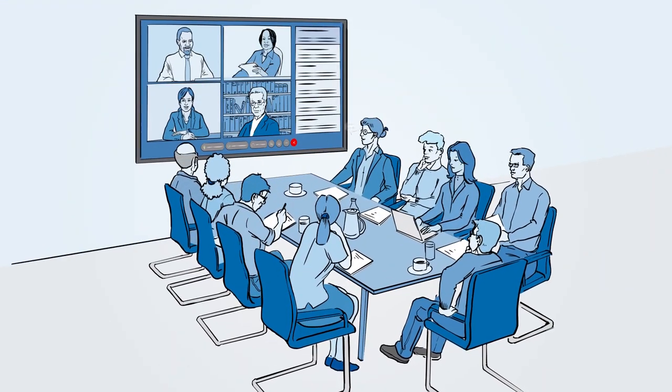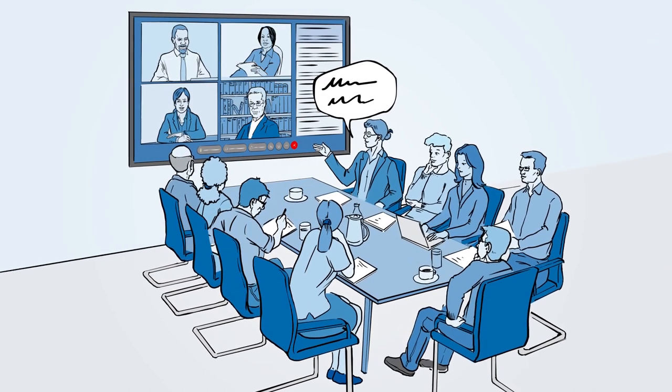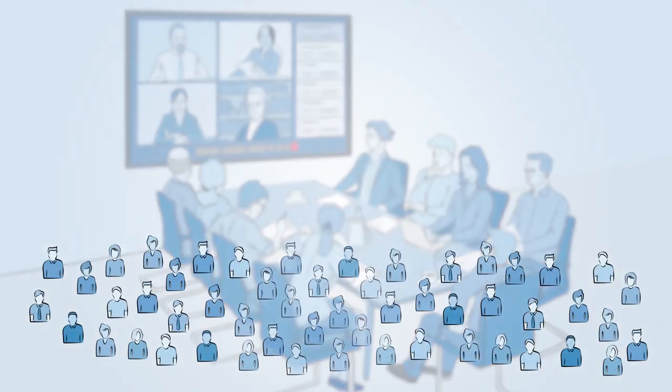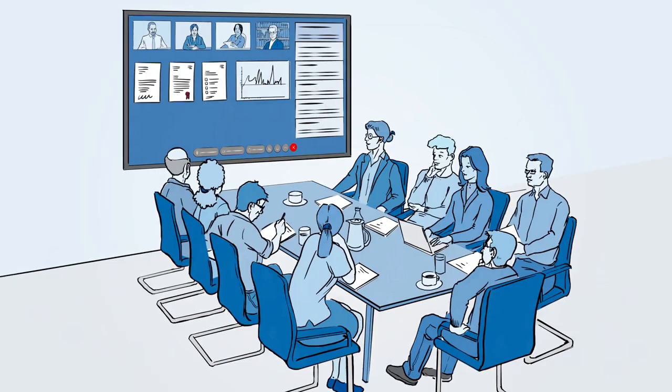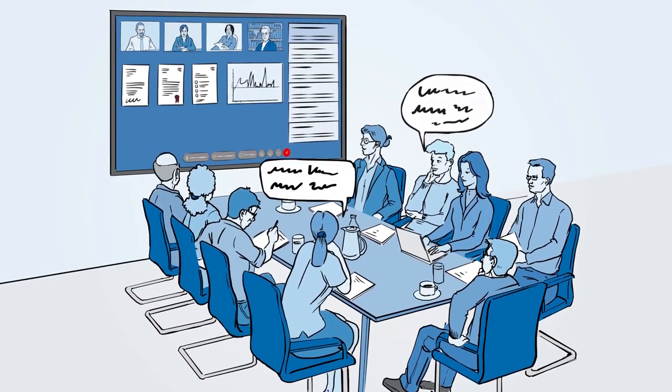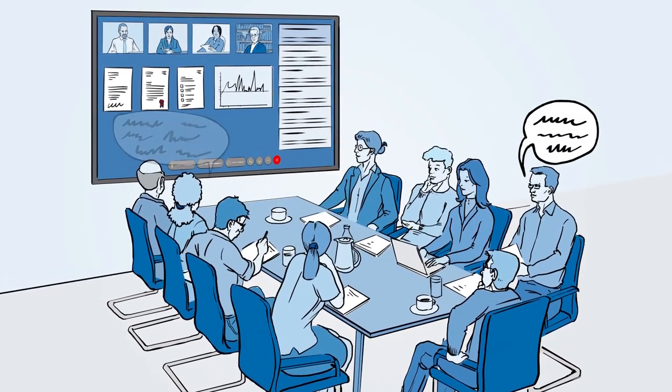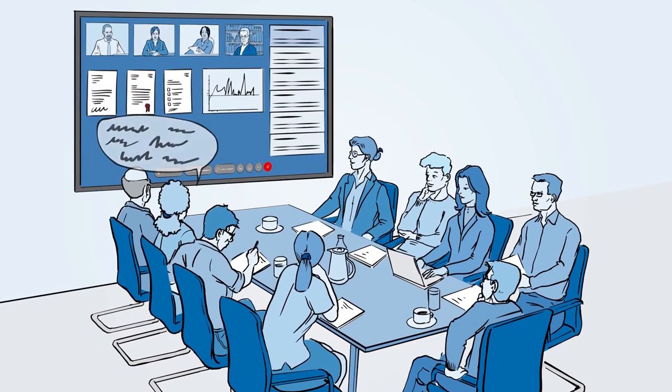The responsible DFG review board then discusses the proposal. The members of the review boards are elected every four years by the academic community itself. They evaluate the proposals either by means of a written procedure or at meetings that take place several times a year.